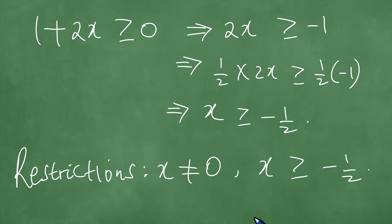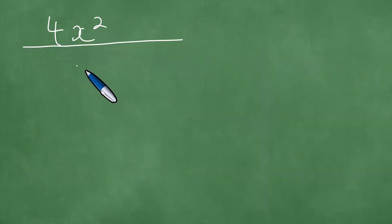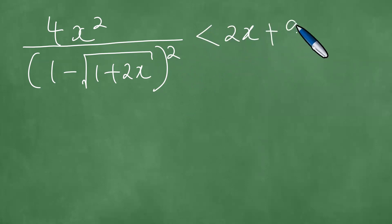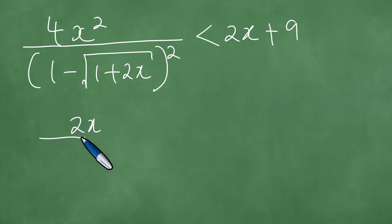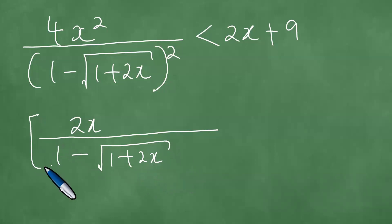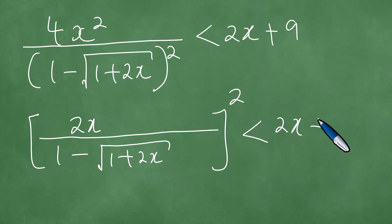To solve this, we take note of the problem itself. We recall that we have 4x squared divided by 1 minus the square root of 1 plus 2x, close bracket, squared, and this is less than 2x plus 9. We take note that the numerator can be written as just 2x, and we divide by the denominator 1 minus the square root of 1 plus 2x, squared, which is less than 2x plus 9.